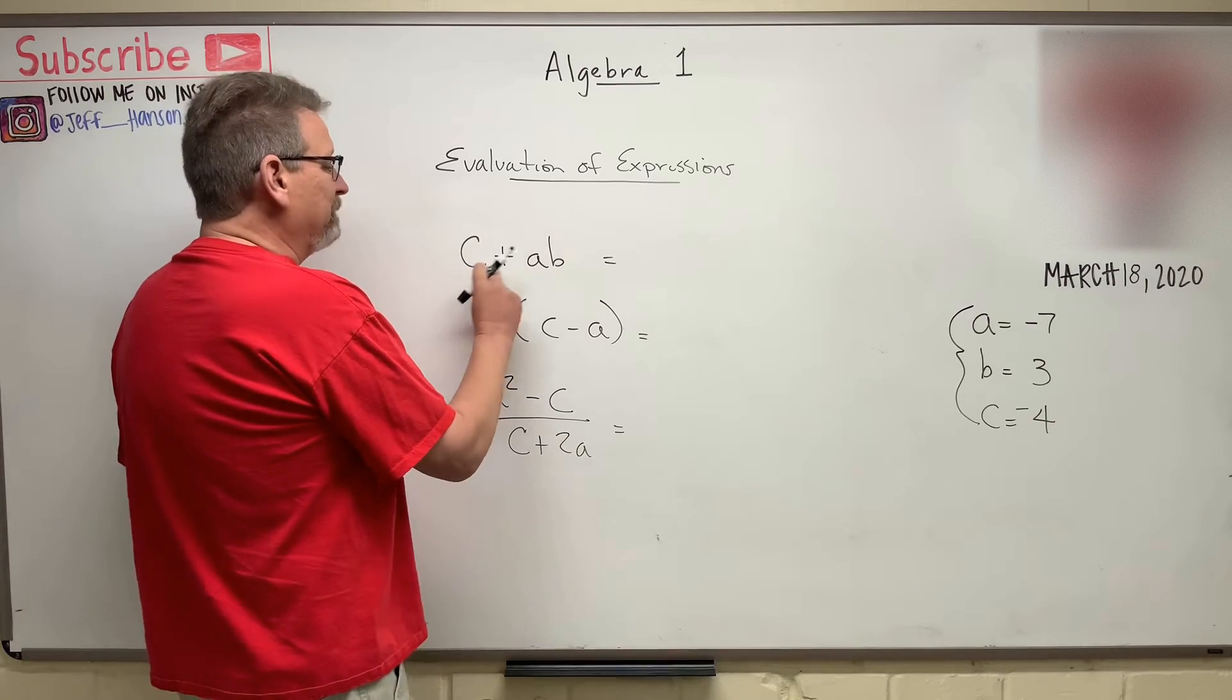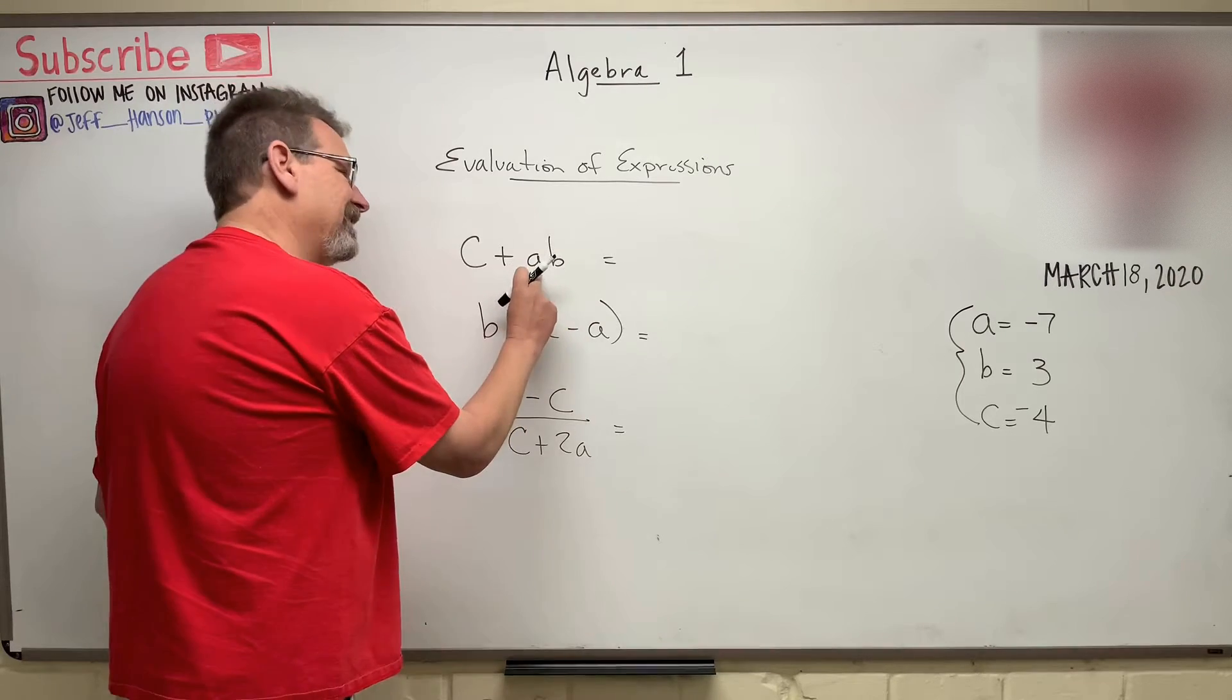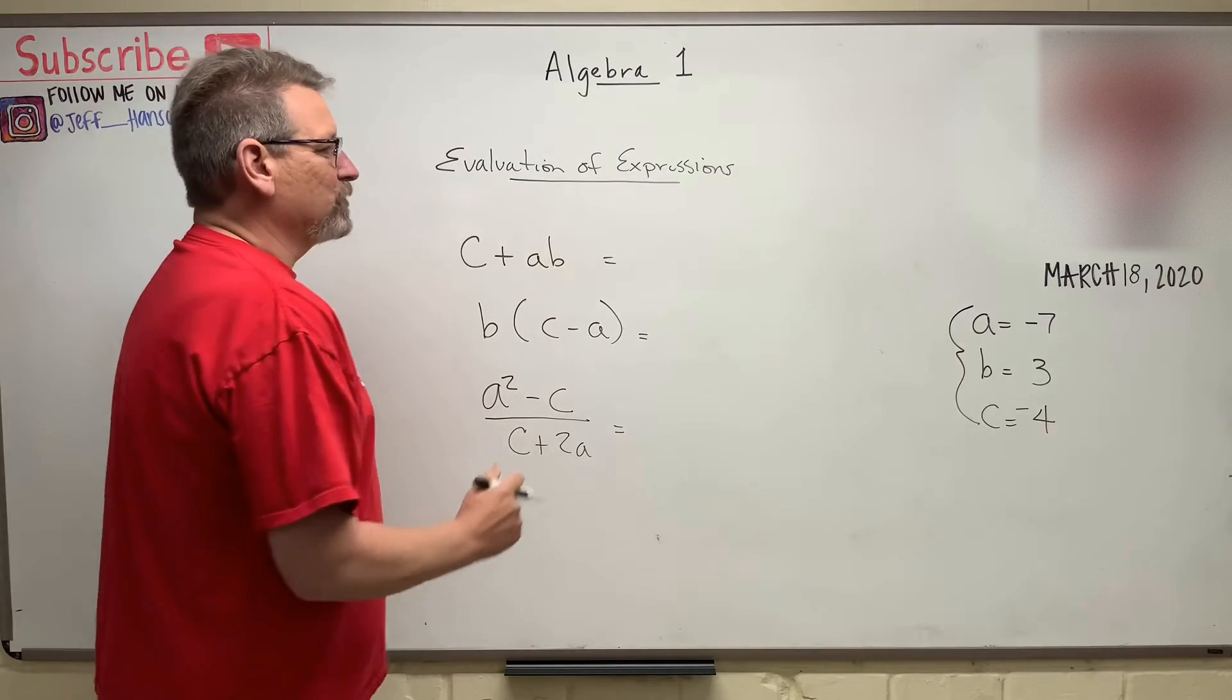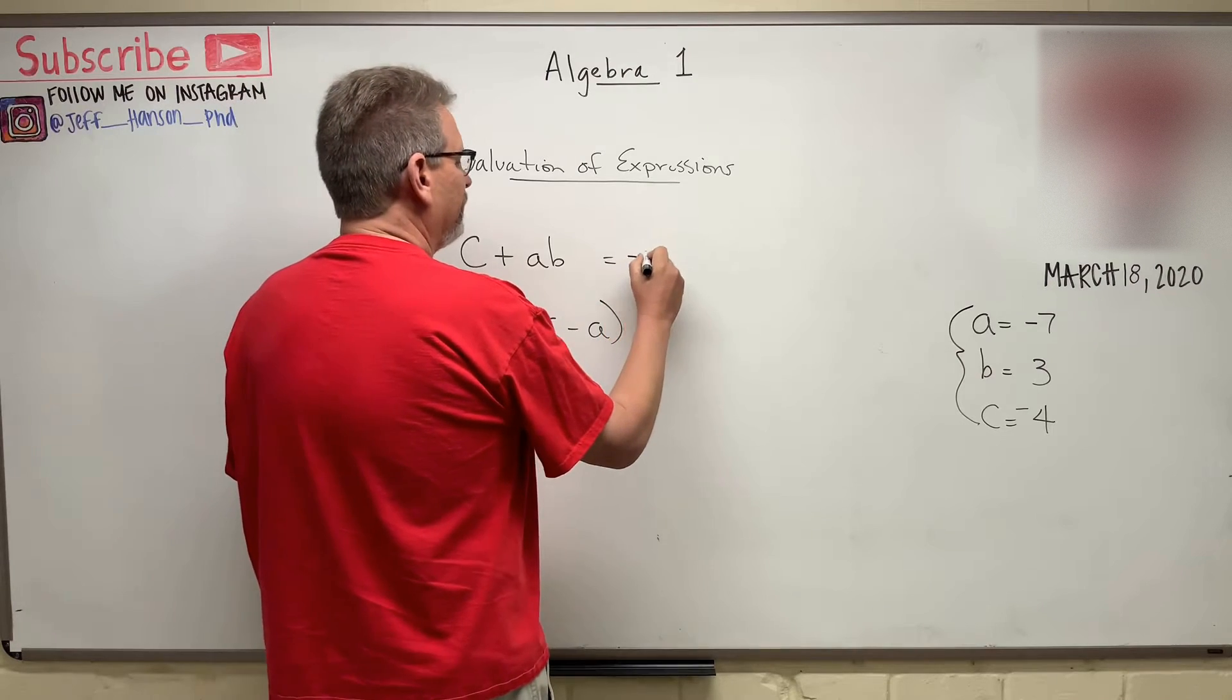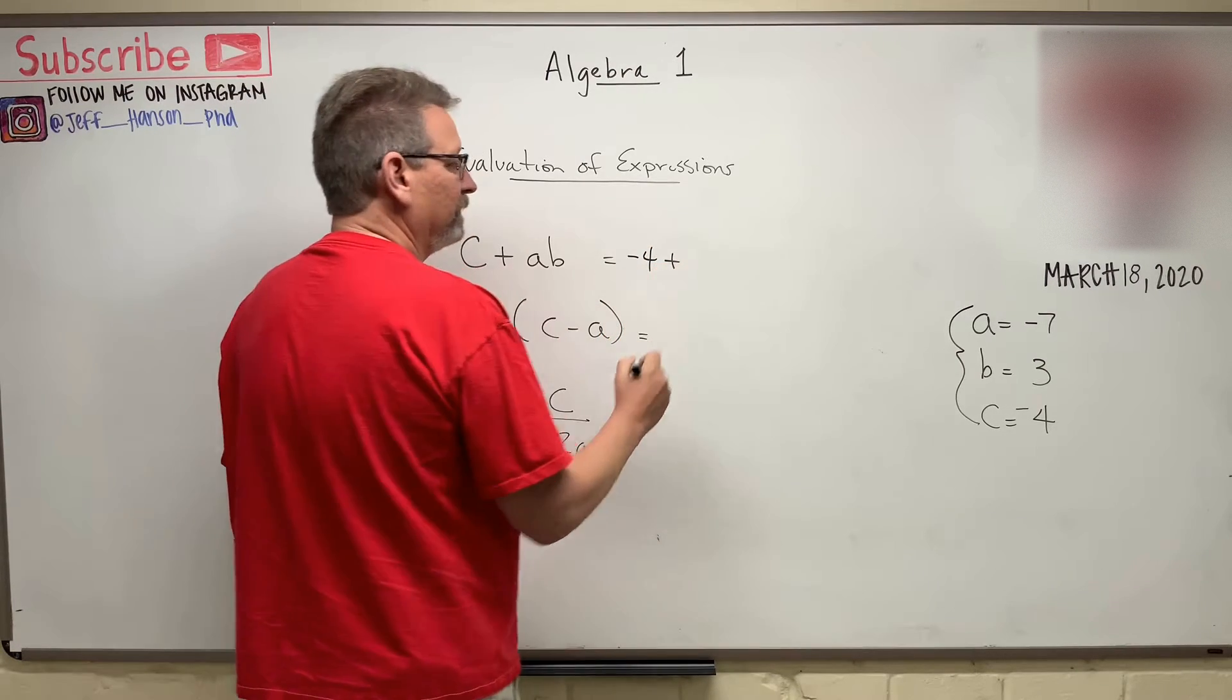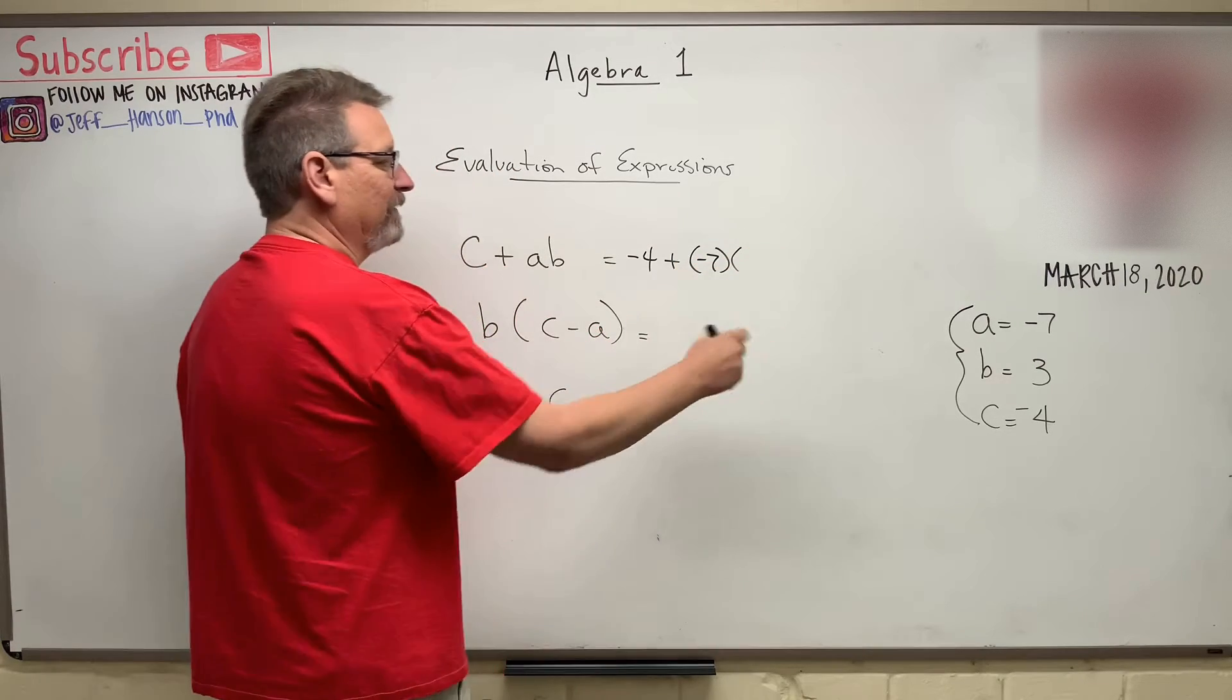Here we go. C plus A times B, right? When you just see an A and a B, that means that's times that, right? So here we go. Let's rewrite this. Let's plug in what we have over there. Negative four plus A is negative seven and B is three.